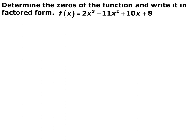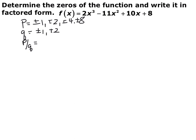We want to determine the zeros of this cubic polynomial and write it in factored form. Using the rational roots theorem: our p's are the positive and negative factors of 8, which are ±1, ±2, ±4, and ±8. Our q's are the positive and negative factors of the leading coefficient 2, so ±1 and ±2. Our possible zeros are all p's divided by q's. Dividing by 1 gives back those same values; dividing by 2 gives us ±½ as a new possibility. So we have 10 possibilities and at most 3 real zeros to find.